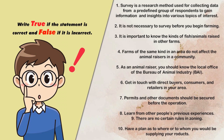Let us assess what you learned. Write True if the statement is correct and False if it is incorrect. One: Survey is a research method used for collecting data from a predefined group of respondents to gain information and insights into various topics of interest. Two: It is not necessary to survey before you begin farming. Three: It is important to know the kinds of fish and animals raised in other farms. Four: Farms of the same kind in an area do not affect the animal raisers in a community. Five: As an animal raiser, you should know the local office of the Bureau of Animal Industry. Six: Get in touch with direct buyers, consumers, and retailers in your area. Seven: Permits and other documents should be secured before the operation. Eight: Learn from other people's previous experiences. Nine: There are no certain rules in zoning. Ten: Have a plan as to where or to whom you would be supplying your products.